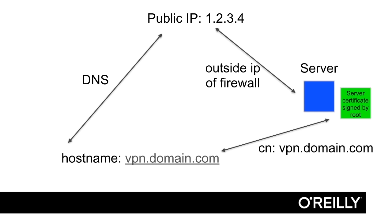So when you request a certificate, you need to request it to be given to the common name — in this example, vpn.domain.com — if that's the hostname you want your clients to connect to. When you have your certificate in place on the outside interface of the firewall and the certificate's common name is vpn.domain.com, you will get the client to connect to vpn.domain.com without any certificate errors. This is exactly the same SSL certificate that you request and buy if you want to run HTTPS on your web server.